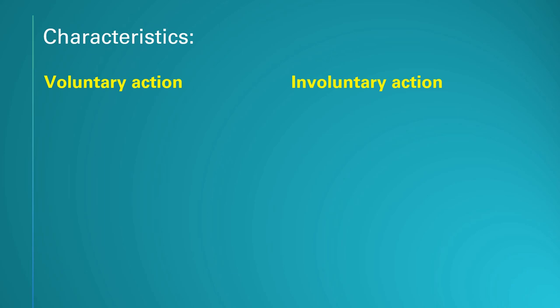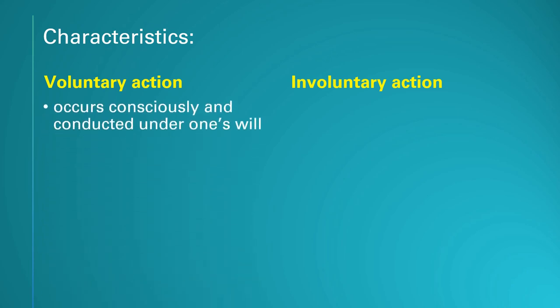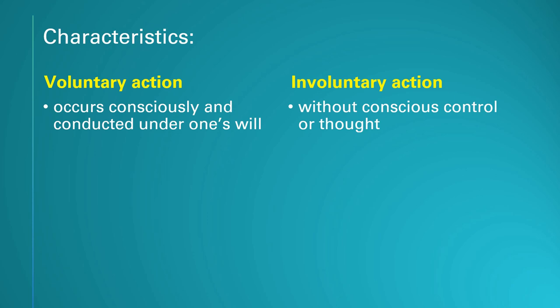Now let's look at the characteristics of voluntary and involuntary action — in BM we call these ciri-ciri atau sifat-sifat. For voluntary action, they occur consciously, meaning we know it is happening, and they are conducted under one's will — you can control whether you do it or not. For involuntary action, they happen without conscious control, you cannot control them, and they happen without thought.